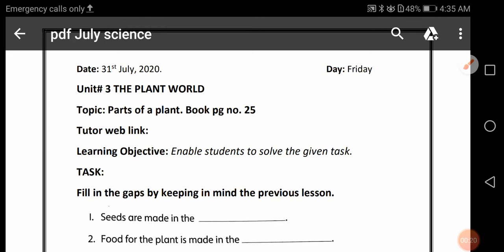Today the date is 31st July 2020 and the day is Friday. We are studying Unit No. 3, The Plant World, and our topic is Parts of a Plant, Book Page No. 25.